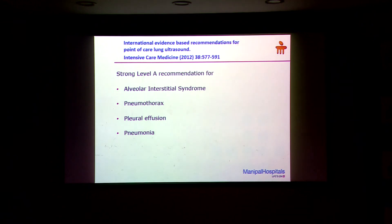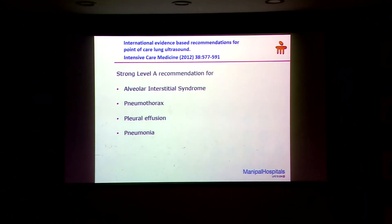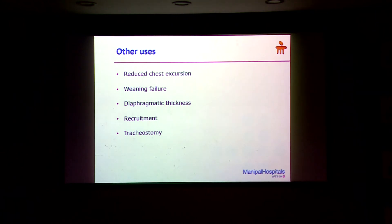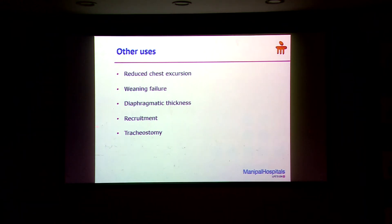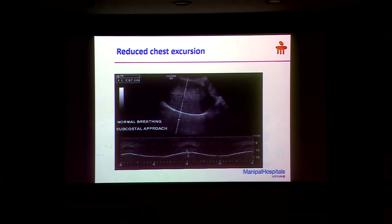They gave strong Level A recommendations for diagnosing four conditions: alveolar interstitial syndrome (which includes ARDS and interstitial lung disease), pleural effusion, and pneumonia. Now that lung ultrasound is established, there is more and more use in other areas as well — people have started looking at reduced chest excursion for weaning failure, using lung ultrasound scores, diaphragmatic thickness, recruitment maneuvers, and tracheostomy guidance.